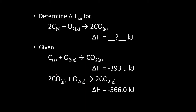Looking at the two given reactions, I need two carbons on the left side of the goal equation. The only reaction that has just carbon has it on the left side, which is good, but I only have one. So I'm going to multiply this entire reaction by two — I can't just multiply the carbon. If I need two carbons, I need two of everything. That also means I need to multiply the enthalpy by two, because whatever change I make to the reaction, I make the same change to the enthalpy.